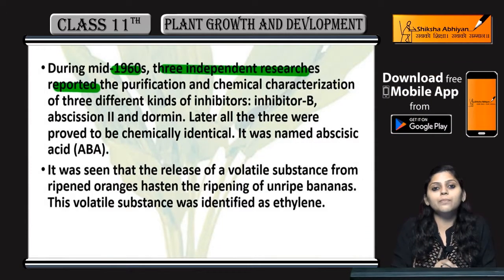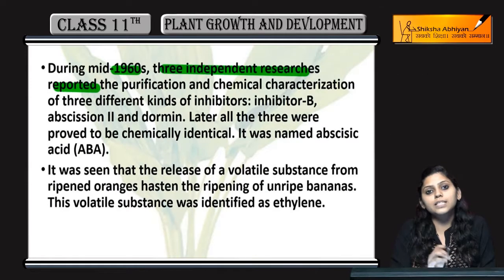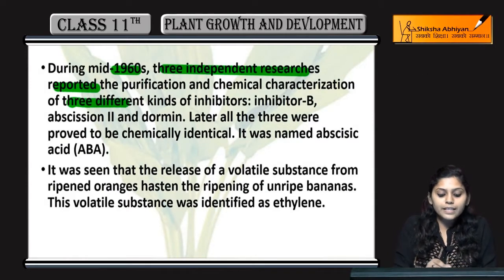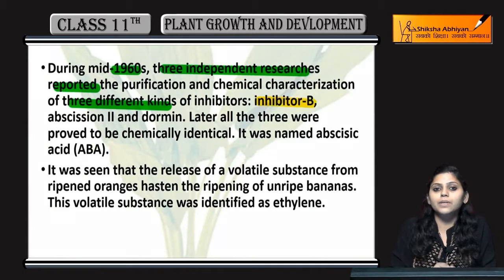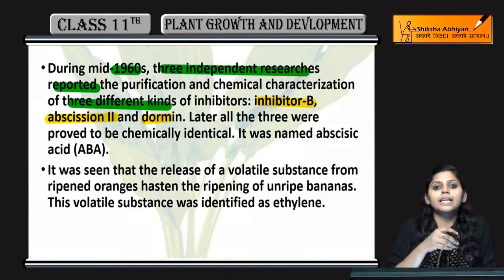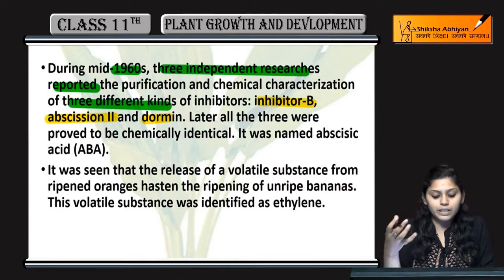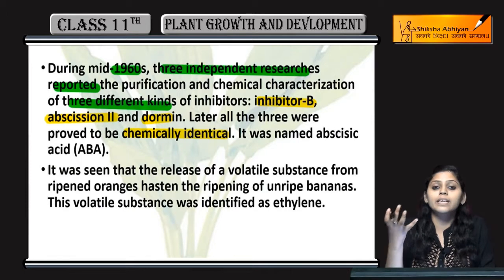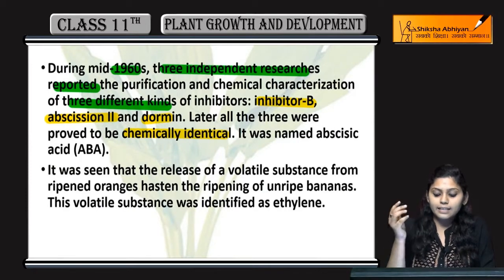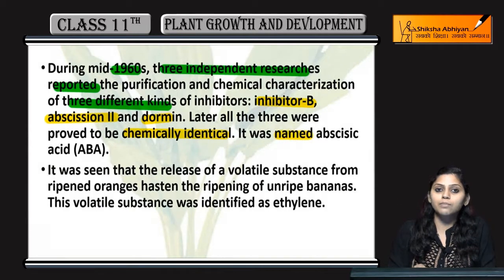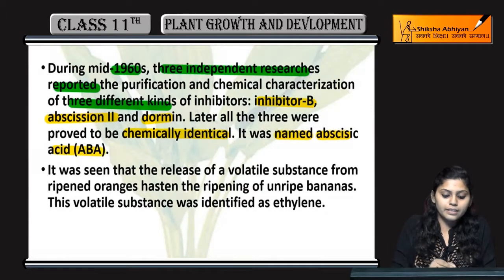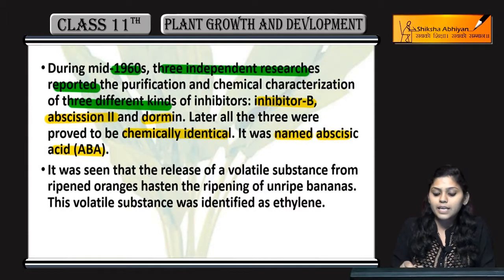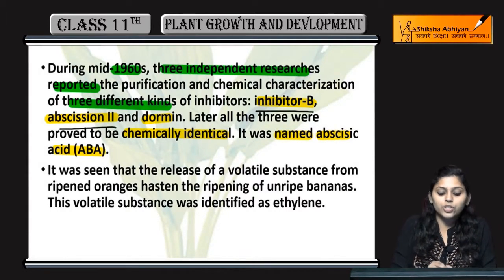Teen independent researches ne report kiya purification and chemical characterization of three different kinds of inhibitors — Inhibitor B, Abscission 2, aur Dormin. Jab inpe study hui, tab dekha gaya that inki chemical composition same hai — ye teeno chemically identical hain. Later inko naam diya gaya: Abscisic Acid.